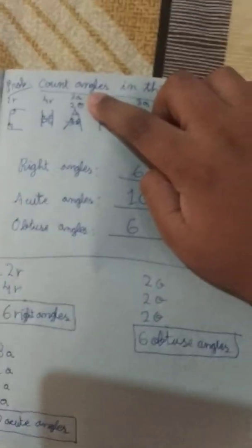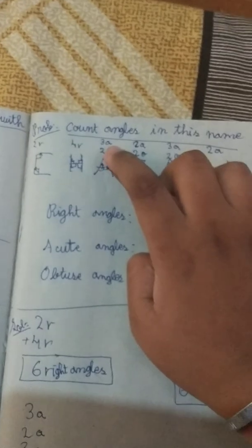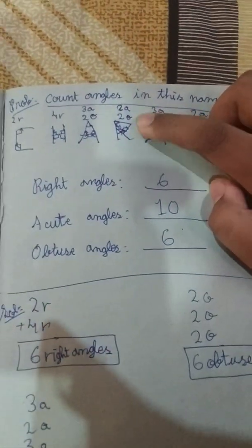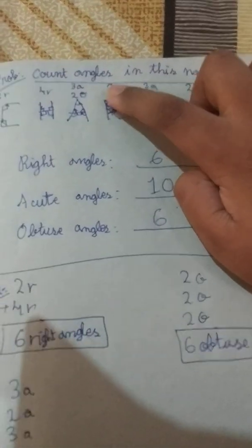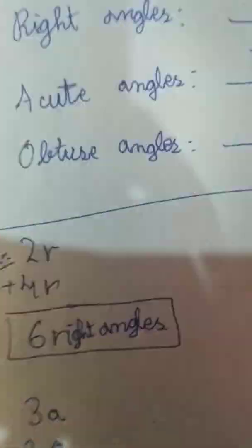And A has three acute angles and two obtuse angles. See: one acute angle, two obtuse angles, another obtuse angle — three acute angles and two obtuse angles. And the R alphabet has two acute angles and two obtuse angles. See: this is one acute, this is another acute, and still two obtuses are there — this is one obtuse, this is another obtuse. So two acute and two obtuse angles are there in the R letter. Now A again — same as before: three acute angles and two obtuse angles.